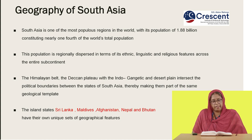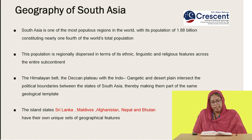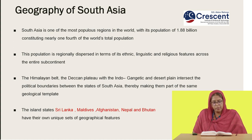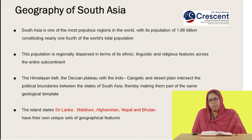The most common basis of ethnicity is language. The Indian constitution recognizes 15 regional languages, including Assamese, Bengali, Gujarati, Hindi, Kannada, Tamil, and others. As for religion, 80% of India's population is Hindu, 14% are Muslims, and the remaining include Christians, Sikhs, and Buddhists. The Himalayan belt, the Deccan plateau, and the Indo-Gangetic and desert plains intersect the political boundaries between states of South Asia, making them part of the same geological template.